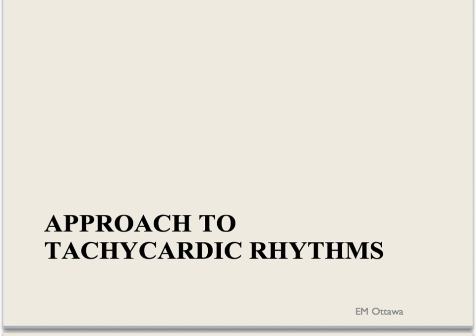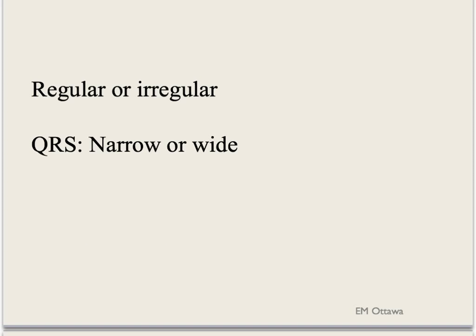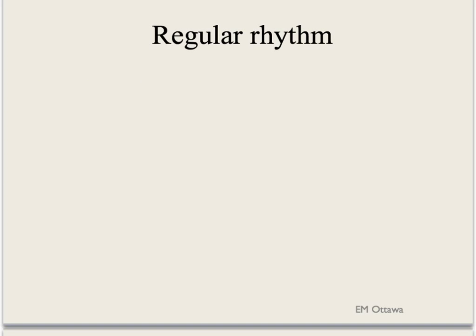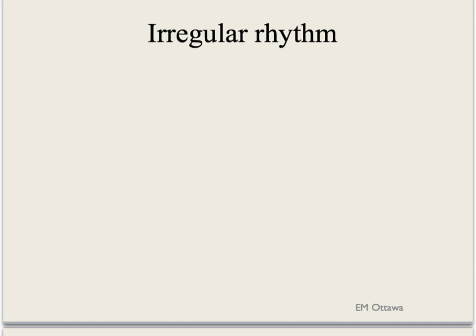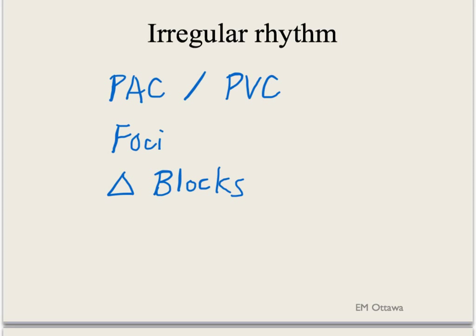Now let's look at an approach to tachycardic rhythms. The two key pieces are whether the rhythm is regular or irregular, and whether the QRS complex is narrow or wide. Regular rhythm suggests that a single impulse focus causes the tachycardia, and it also usually happens in re-entry tachycardia. Irregular rhythm can result from premature beats either from the atrium or the ventricles, multiple foci, variable blocks, or disorganized electrical activity.